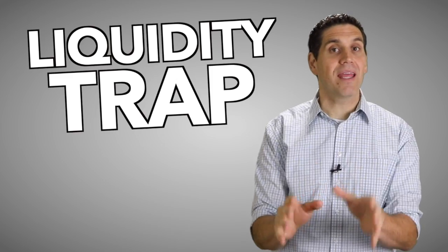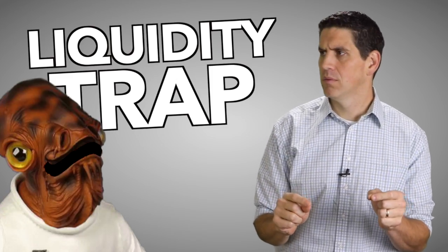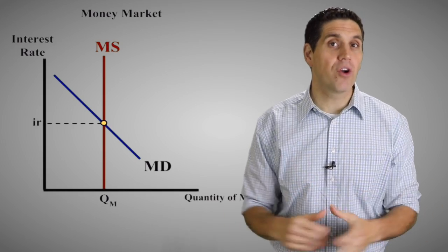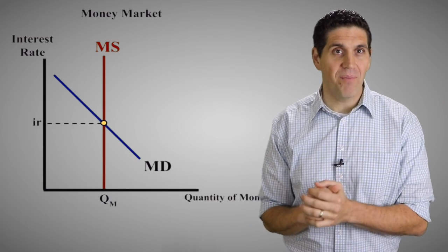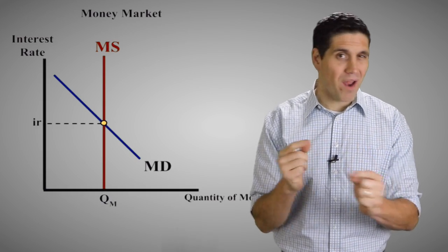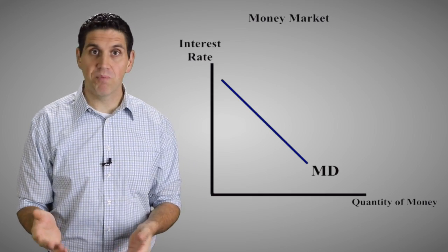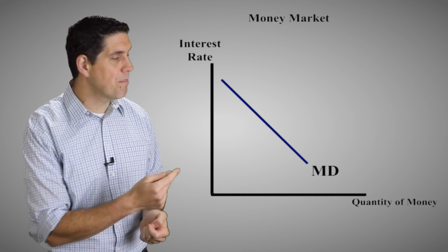Before I explain what's happening in the economy, let's cover some academic stuff — some things you might see in your econ class, specifically the concept of a liquidity trap. I'm assuming you've already learned the money market graph, but let me give you a quick refresher just so we're on the same page. The demand for money shows people's liquidity preference.